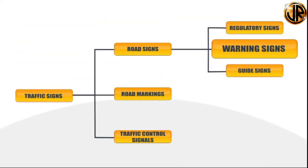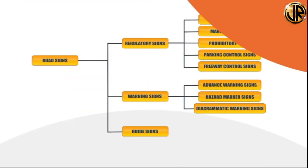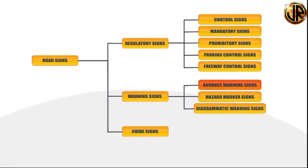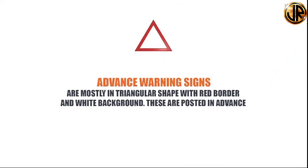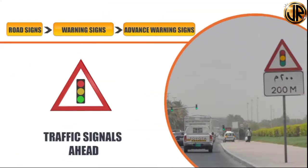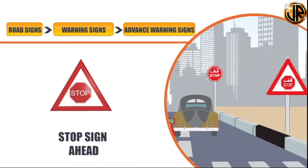Warning signs warn road users about hazards or potential hazards ahead. There are three types: advance warning signs, hazard marker signs and diagrammatic warning signs. Advance warning signs are mostly triangular with a red border and white background, posted in advance before the situation. The 'traffic signal ahead' sign warns drivers they are approaching a traffic light; motorists must slow down, maintain lane discipline, position their vehicle according to their direction and obey the traffic light. The 'stop sign ahead' sign indicates there is a stop sign ahead, used before turns to warn drivers; motorists must stop as the view might be obstructed.